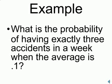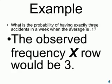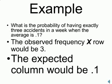Here is another example. What is the probability of having exactly three accidents in a week when the average accidents per week is 0.1? Here the observed frequency, x-row, would be 3. And the expected column would be 0.1.